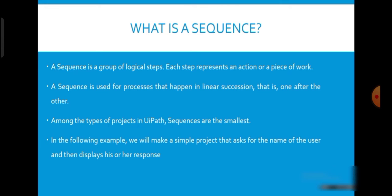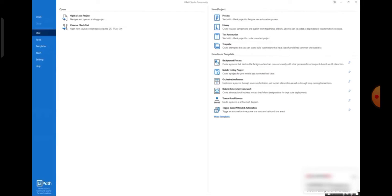To explain sequences in UiPath Studio, I am considering a simple project scenario of accepting a name from the user and then displaying the response. It will accept the name and it will display the response. If you have any doubts, please post them in the comment section.